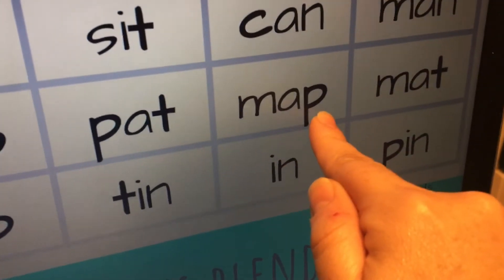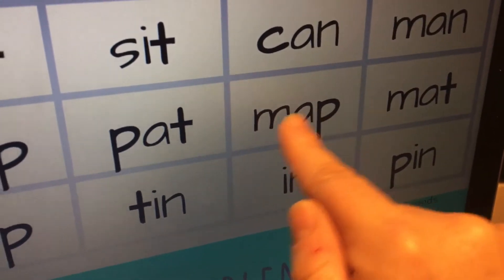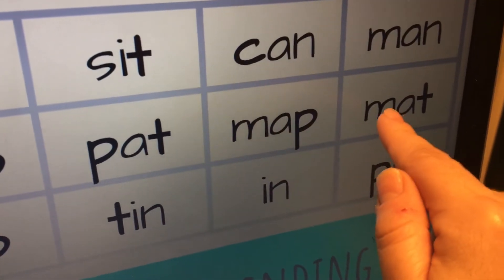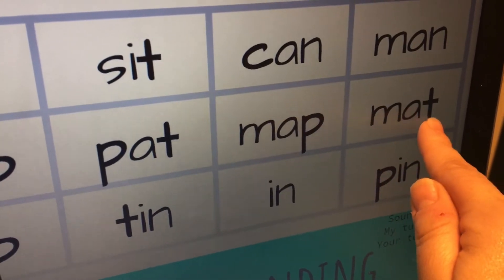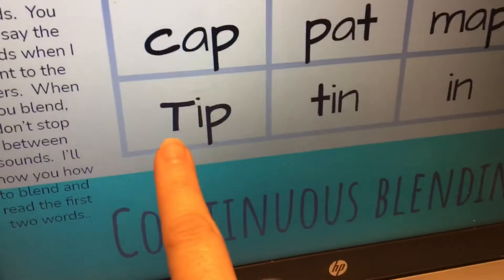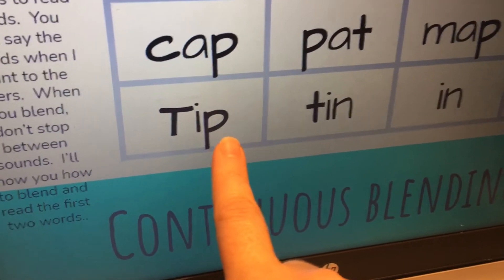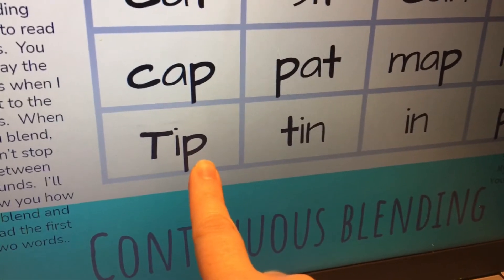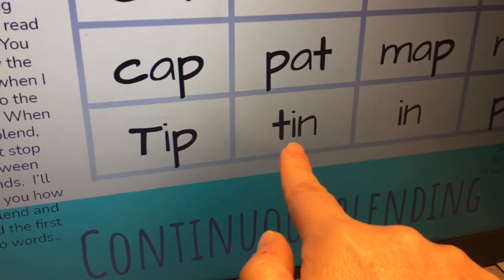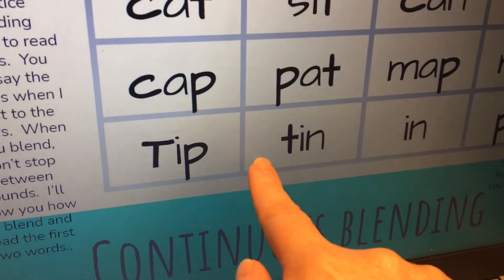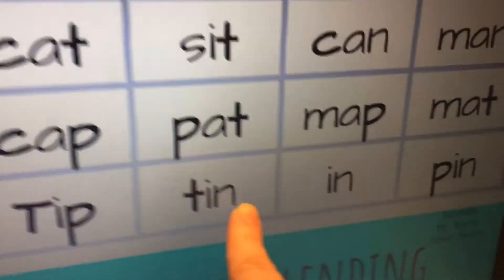M-A-P. M-A-P. Word. Map. M-A-T. M-A-T. Word. Mat. T-I-P. T-I-P. Word. Tip. T-I-N. T-I-N. Word. Tin.